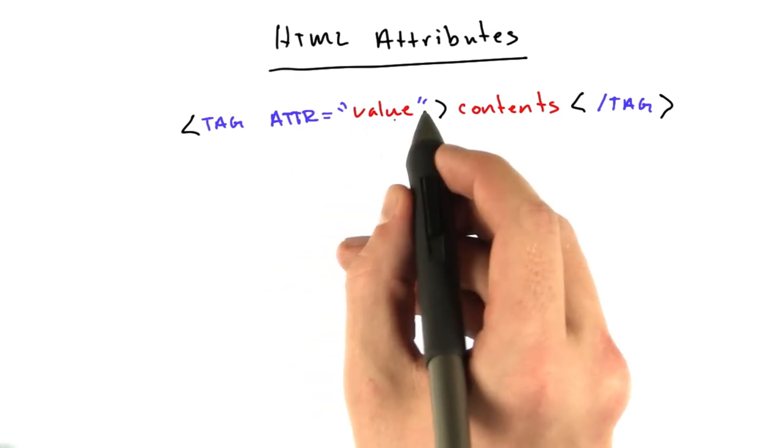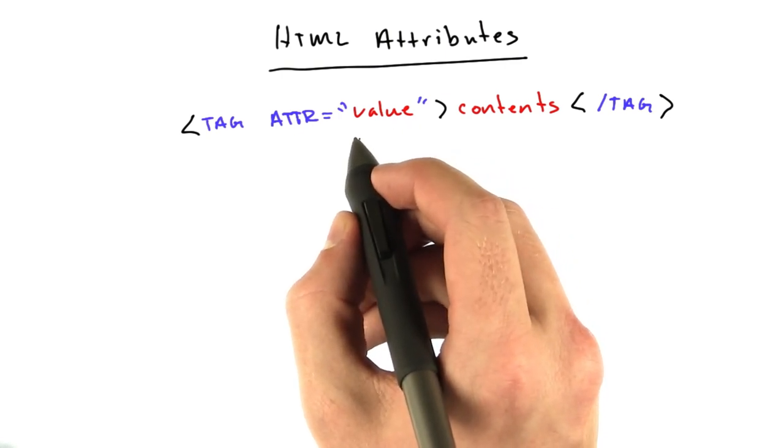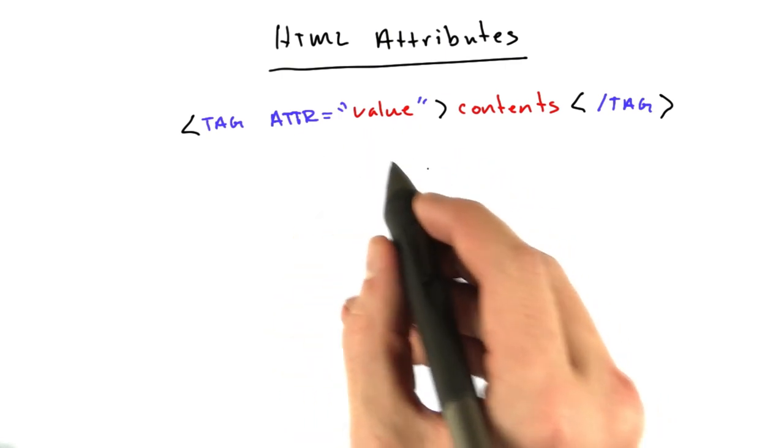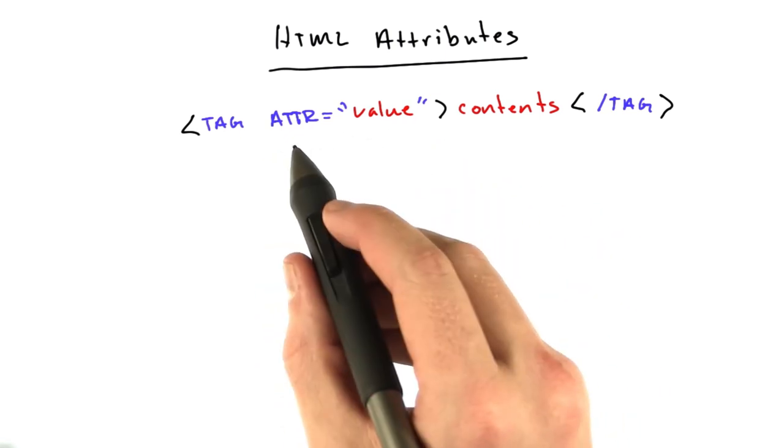Equals, and then you've got quotes, and the value is inside the quotes. And attributes these days always equal a value. Didn't used to be the case, to be honest, but everything we're going to do is equals a value. And tags can actually have multiple attributes.